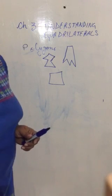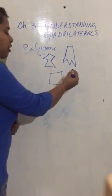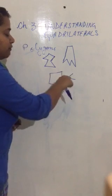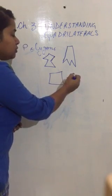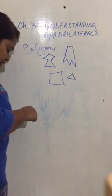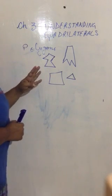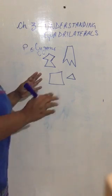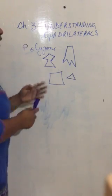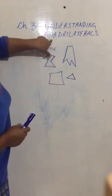Now, which is the polygon having the minimum number of sides? Triangle. If I draw with two line segments, it is not closed, but as soon as I join it, it becomes closed, and this becomes a triangle. So the polygon having the minimum number of sides is a triangle having three sides. With four sides, some of you might be thinking square or rectangle — but a polygon made up of four line segments is called a quadrilateral.